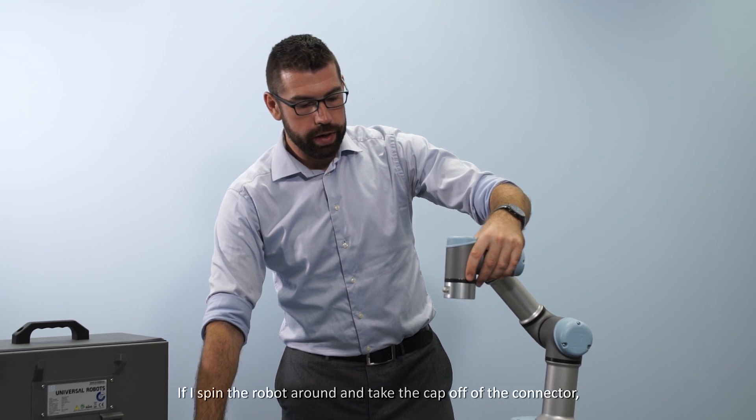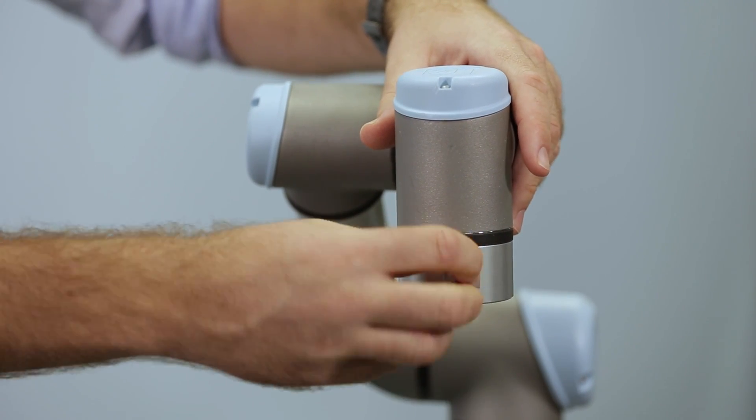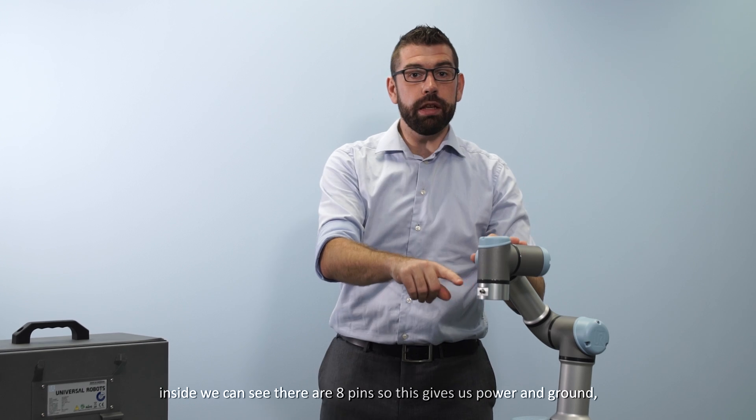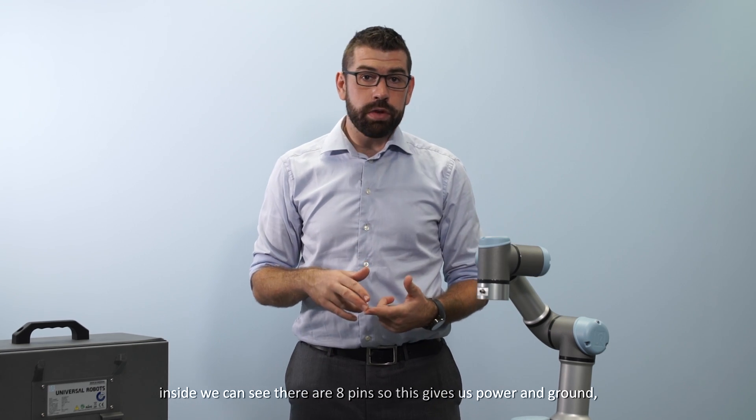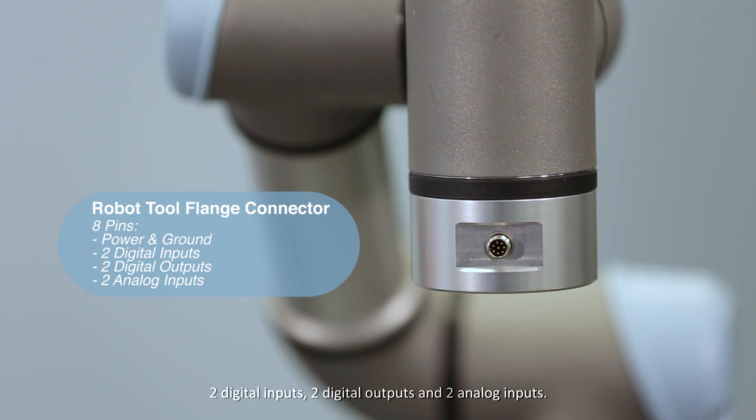If I spin the robot around and take the cap off of the connector, inside we can see there are eight pins. This gives us power and ground, two digital inputs, two digital outputs and two analog inputs.